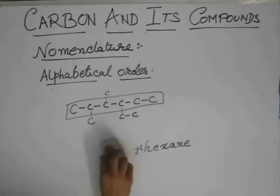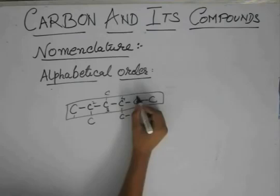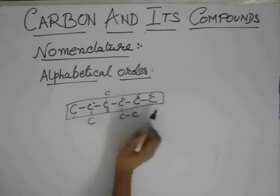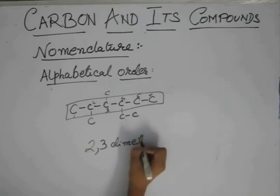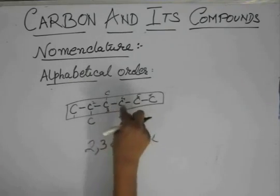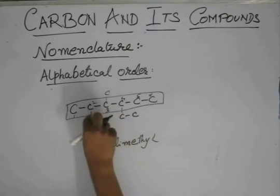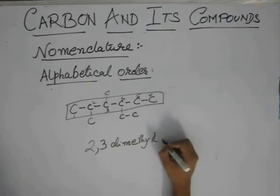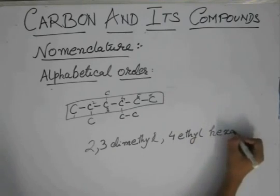It should be like one, two, three, four, five, six. So it's two, three dimethyl, four ethyl hexane. Because counting from here will give us two plus three plus four, and counting from here will give us three plus four plus five. And two plus three plus four is a lower sum than three plus four plus five. So this should be the actual thing. Two, three dimethyl, four ethyl hexane.